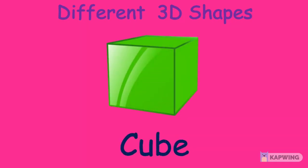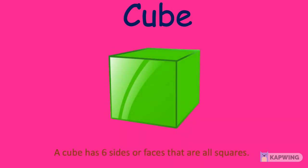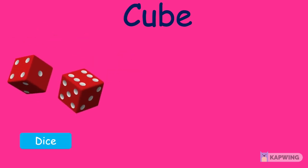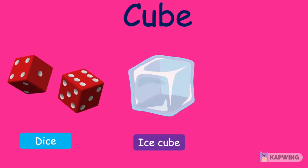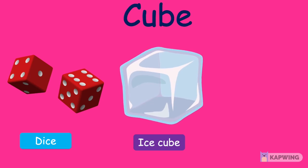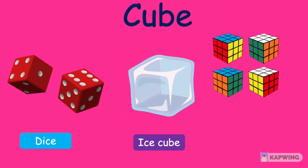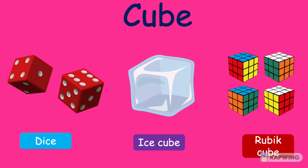This shape is a cube. A cube has six sides or faces that are all squares. Here you can see two dice in the shape of a cube. Then we can find an ice cube, which has six sides or faces and they are all squares. And we have got four Rubik cubes and all of them have the same cube shape.